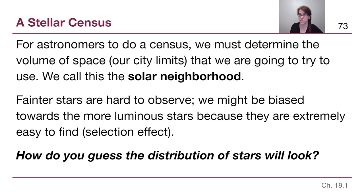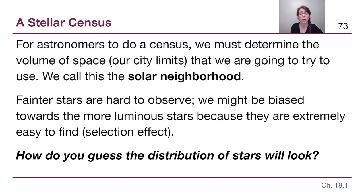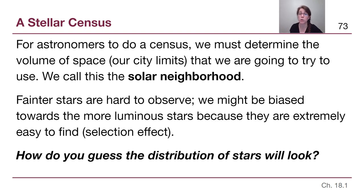Keep that in mind as we now think about the stellar census. For astronomers to do a census, we have to determine our city limits. In the case of space, we're basically deciding a certain distance away in all directions to create a volume of space that is going to be our area that we're surveying — we're going to call this the solar neighborhood. The super bright stars are the ones that are very easy to track down and notice. Fainter stars are really hard to observe — they might be the people who ignore the form. So there's a chance that we're going to be biased more towards the bright, more luminous stars, and we might undercount the faint stars. This is called a selection effect, and we need to be aware of it.